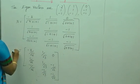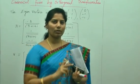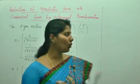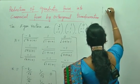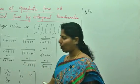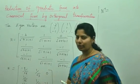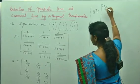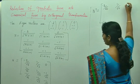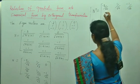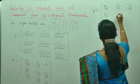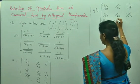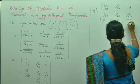The next step is to find N-transpose by interchanging rows into columns. The N-transpose matrix has rows: (minus 2 over root 6, 1 over root 6, minus 1 over root 6), (1 over root 3, 1 over root 3, minus 1 over root 3), and (0, minus 1 over root 2, minus 1 over root 2).